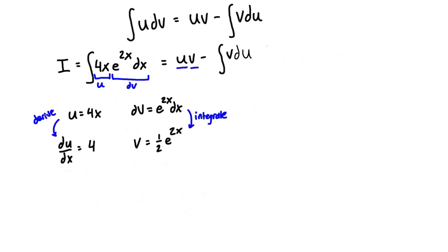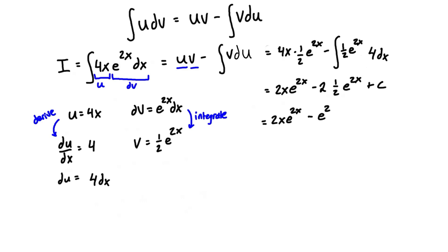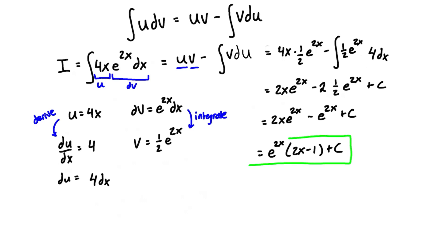Since dv = e^(2x) dx, integrating gives v = (1/2)e^(2x). Now we fill in the formula: u·v minus the integral of v du becomes 4x·(1/2)e^(2x) minus the integral of (1/2)e^(2x)·4 dx. That simplifies to 2x·e^(2x) minus 2 times (1/2)e^(2x), which gives 2x·e^(2x) minus e^(2x) plus C.